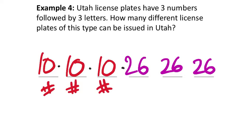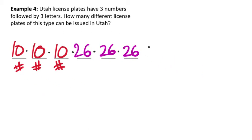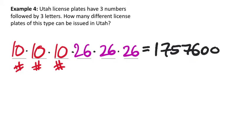The Fundamental Counting Principle says we just multiply all six values: 10 times 10 times 10 times 26 times 26 times 26. The calculator gives us 17,576,000 possible combinations on a license plate. And in Utah, there are only about three million people, so that's more than enough.